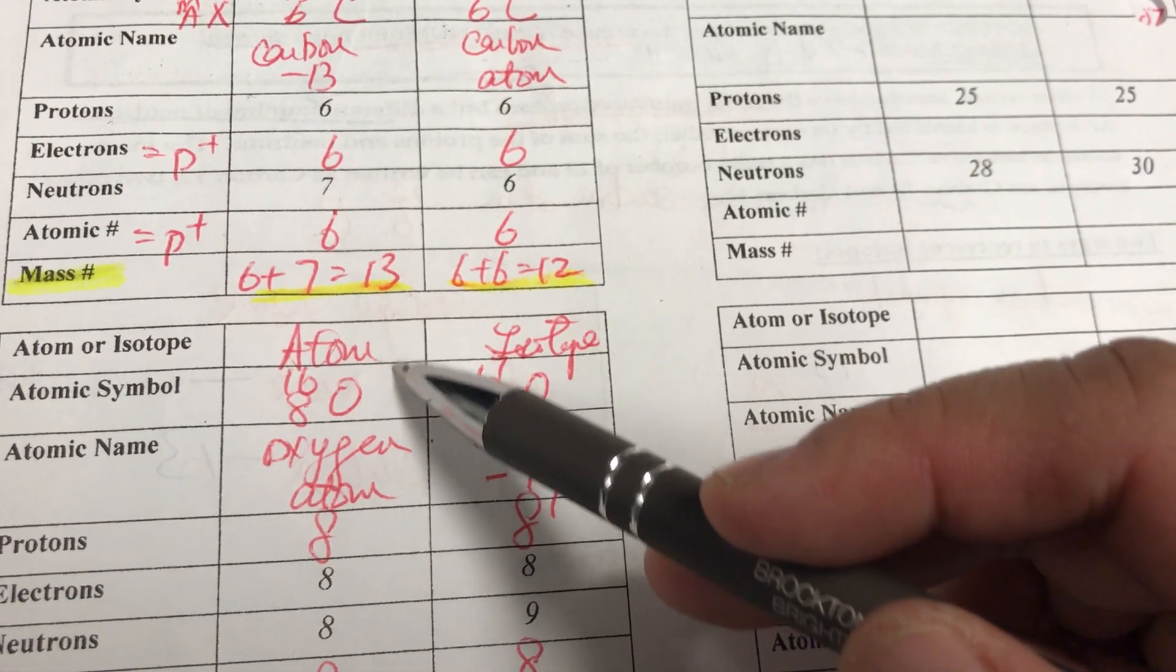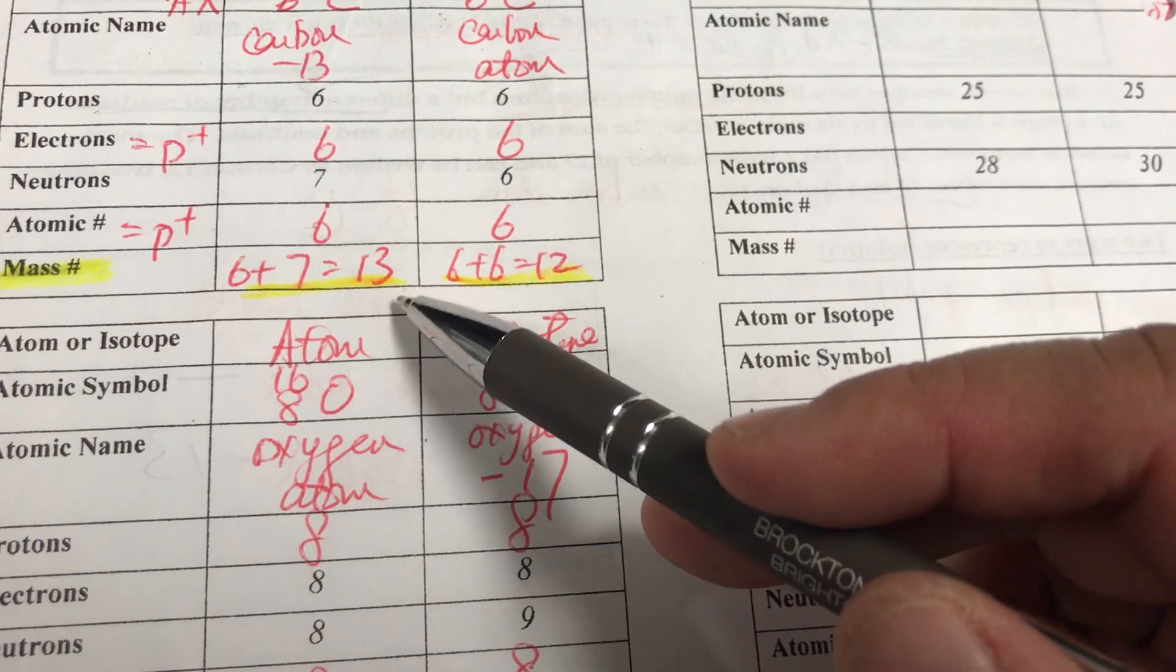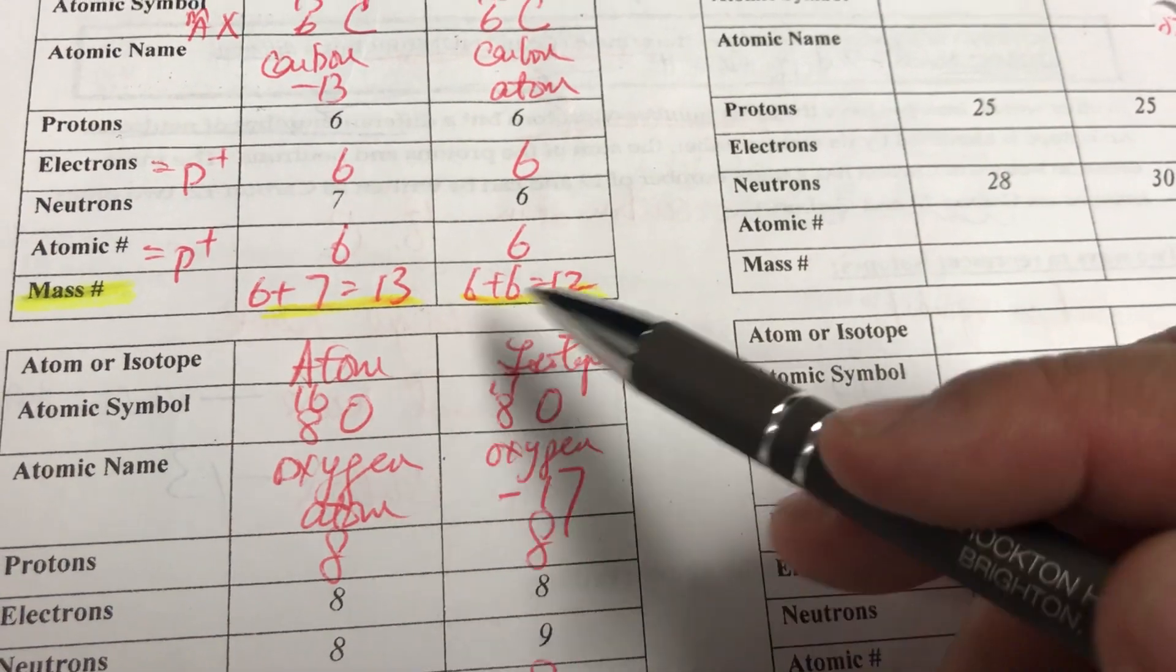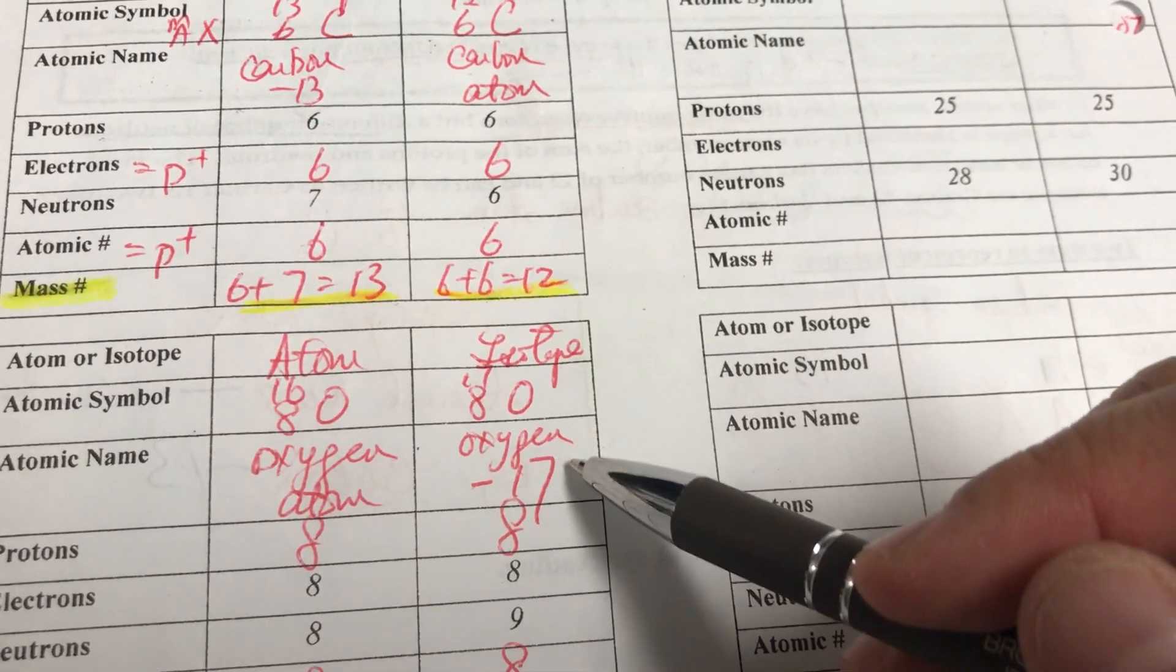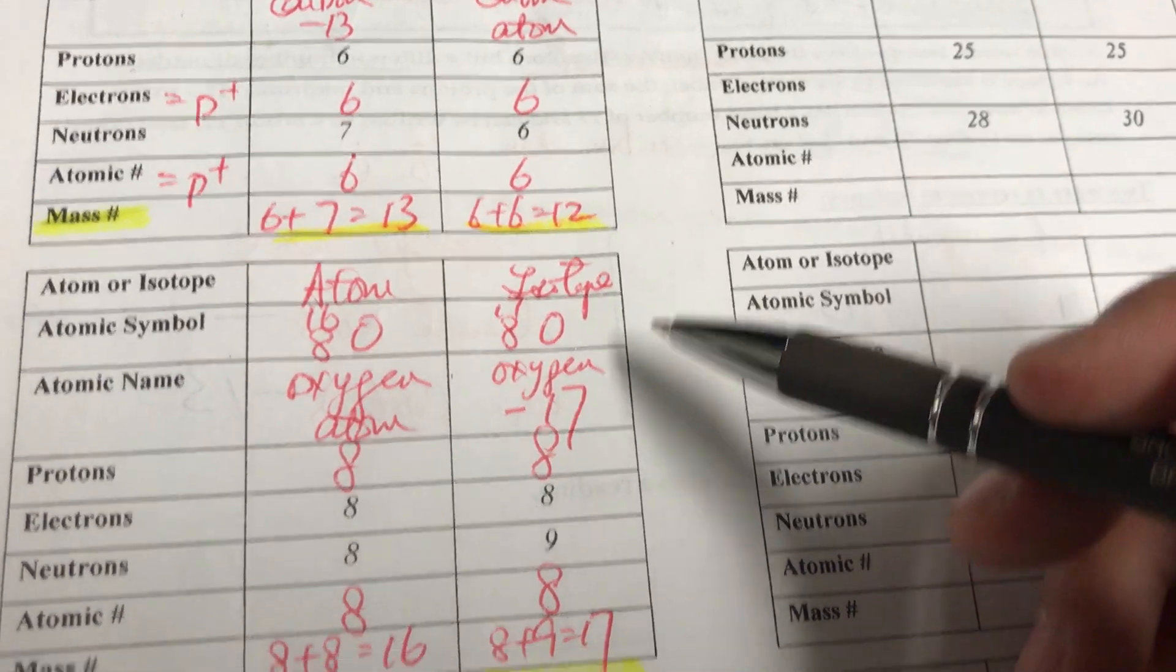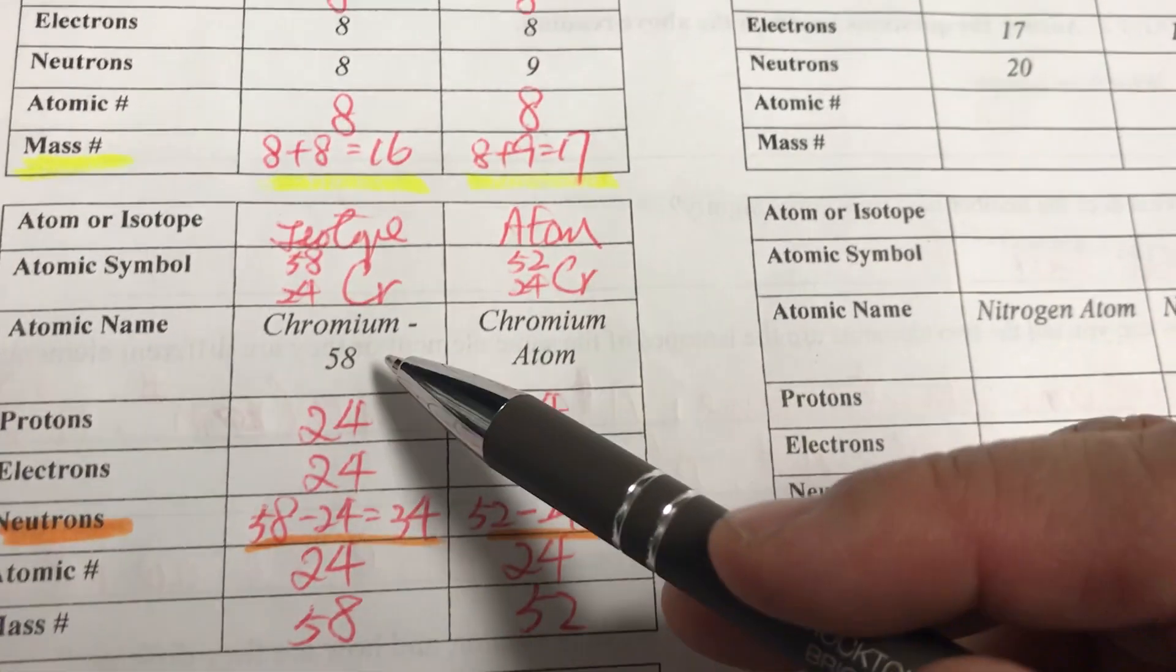Okay, and because this is the same as the one on the periodic table, this will be an atom, oxygen atom. This will be an isotope because it's not the same mass number. So the isotope is oxygen dash 17.